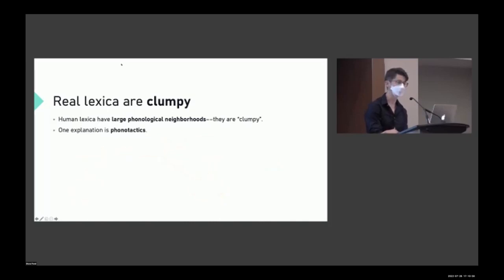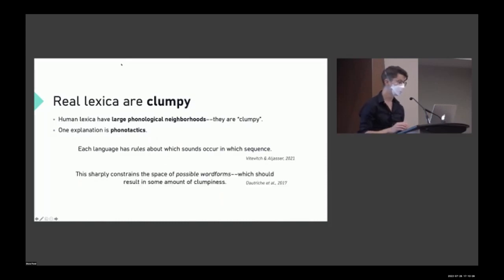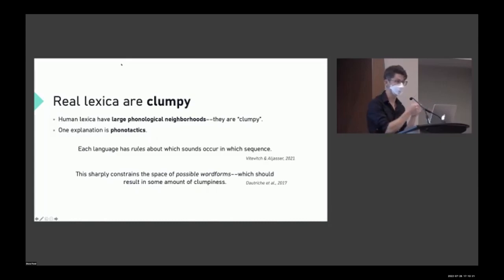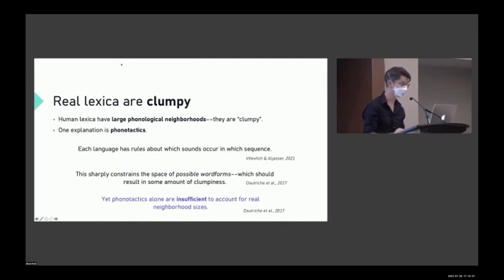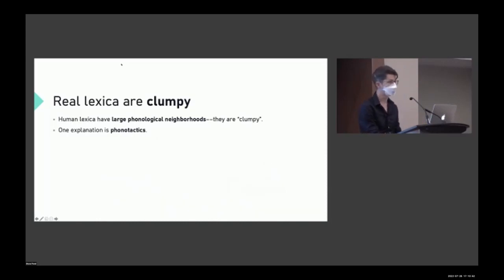One explanation for this clumpiness is just the existence of phonotactics — rules that real languages have about which sounds can occur in which sequence. Phonotactics constrain the space of possible word forms, so any given language will have a subset of possible sound sequences, which results in some amount of clumpiness. However, recent 2017 research showed that even if you simulate lexica that match real lexica according to their phonotactics, those phonotactics are insufficient to account for the density we observe in real languages.